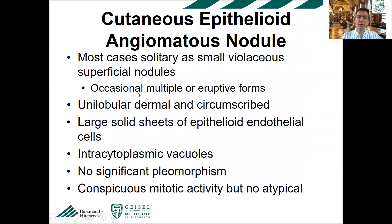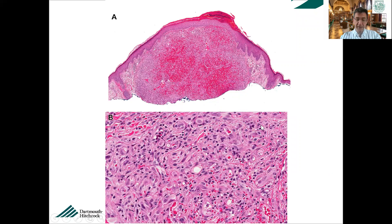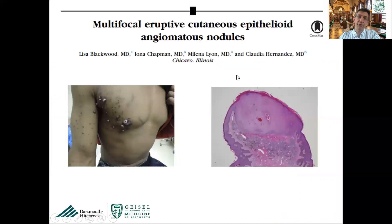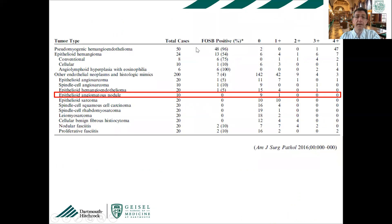Cutaneous epithelioid angiomatoid nodule can be multiple, eruptive, or solitary, and kind of resembles epithelioid hemangioma. It can have conspicuous mitotic activity, but the mitoses are not atypical. You see a well-circumscribed nodule in the dermis; intratumoral hemorrhage is a very common finding and a clue to the diagnosis. There are sheets of epithelioid endothelial cells with abundant eosinophilic cytoplasm and enlarged nuclei, and characteristically an epidermal collarette. A large study from Boston showed that none of the epithelioid angiomatoid nodules showed FOSB positivity, suggesting it is a distinct entity with a different molecular pathogenesis.